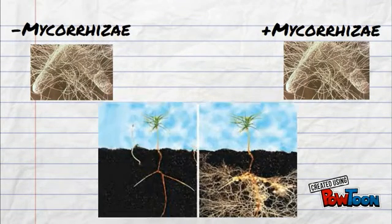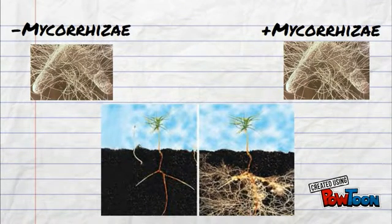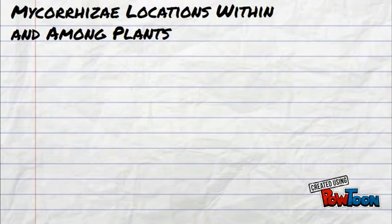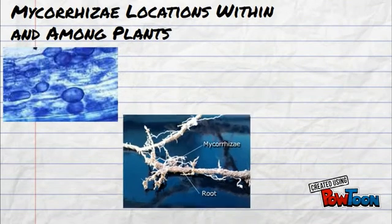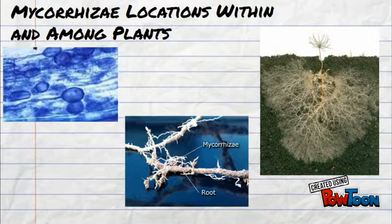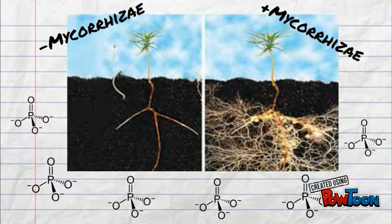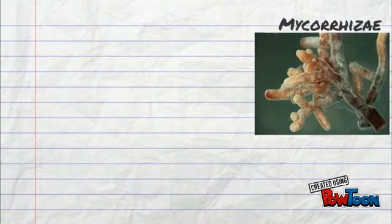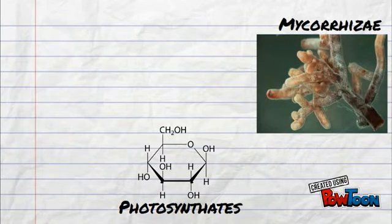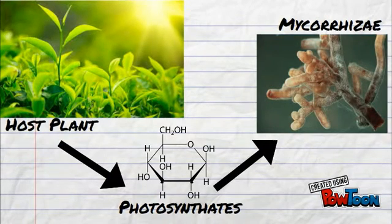Mycorrhizae assist plants by expanding and complementing their root functioning. Mycorrhizae live in two places during their symbiotic relationships with plants: in the inner root volume of the plant itself, and in the soil around the plant's roots, which connects the plant's root system to a much larger soil volume. This increases soil contact and allows plants to reach and obtain more resources, like phosphorus, that they couldn't reach with just their roots alone. Mycorrhizae get mostly all of the nutrients needed for their survival from their host plants' products of photosynthesis.